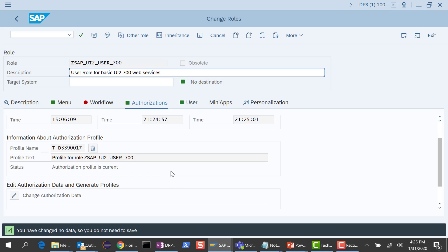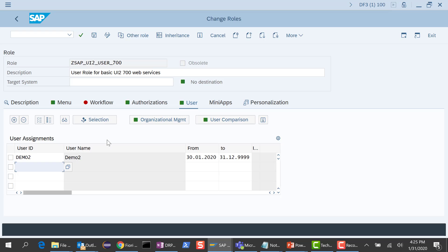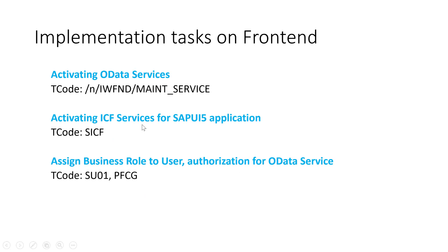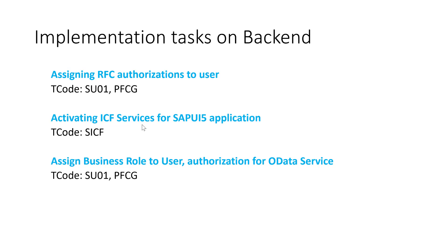All the steps I need to do on the front-end server are done. This user — the demo2 user — belongs to this role, so he has access to the OData service from the front-end side. Now, because I am using a hub deployment, I would have to go to the back-end server. This is the first time I have to go to the back-end. I need to create the same user on the back-end and give them RFC authorizations so that the RFC connection works, and also authorizations for the OData service.